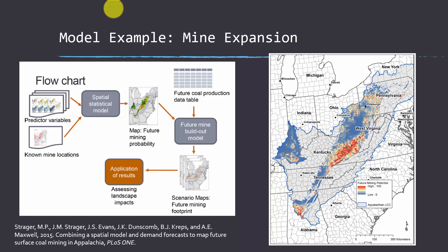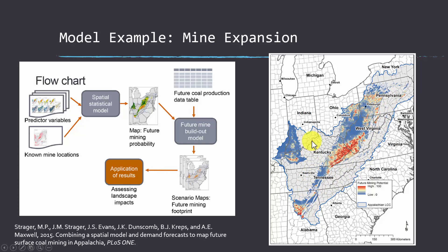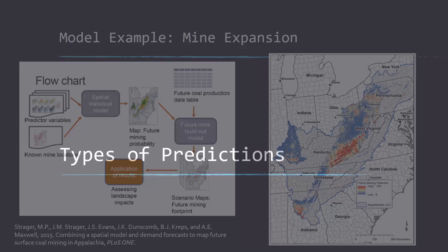This is another example of a likelihood prediction, this time trying to predict into the future. We have this mid-Atlantic region and we'd like to predict the likelihood that an area might be surface coal mined in the future. All areas that have coal were evaluated, and the areas in red were predicted to have a more likely chance of being coal mined in the future. Areas without coal were excluded since there'd be no point making a prediction where there isn't any coal. That's another example of a probabilistic prediction.